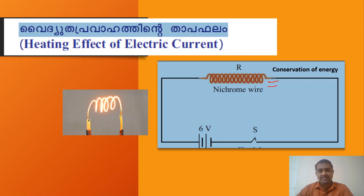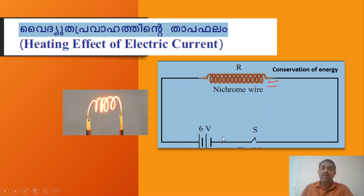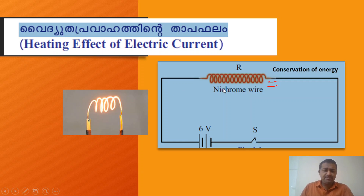We have a simple circuit. A Nichrome wire is connected and attached to a 6V battery. There is a switch. Now let's close the switch — the circuit is connected. The electrical energy is converted to heat energy across the Nichrome wire.